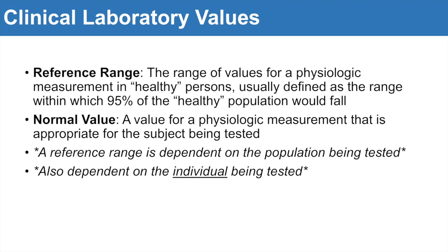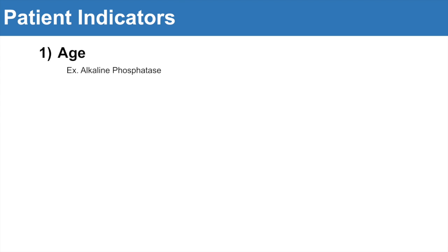Patients have particular indicators that would affect lab values, and one of them is age. The example is alkaline phosphatase. With alkaline phosphatase, newborns typically have a high level, and this level will actually increase at puberty but then fall — their serum levels will fall later in life. So we always have to think about the age of the patient and how this will influence the lab value we're looking at.